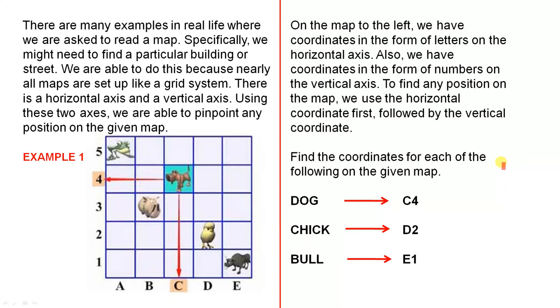Find the coordinates for each of the following on the given map. Firstly the dog. Now remember we always start from this point here as we saw in previous videos. For the dog you do the horizontal first so that's C, then you do the vertical 4. See how it's leveled with 4? So the answer is C4. For the chick, start from the beginning, go across to D, 2. Of course it's leveled with 2, so the chick is D2. For the bull, start from the beginning and go across to E, 1. So E1 is the bull.